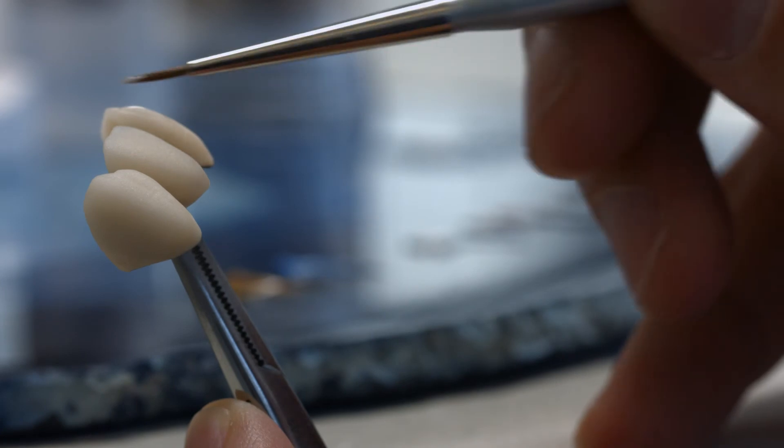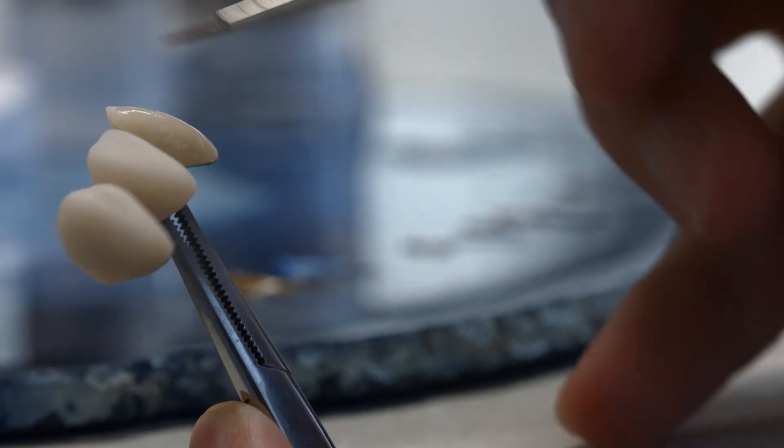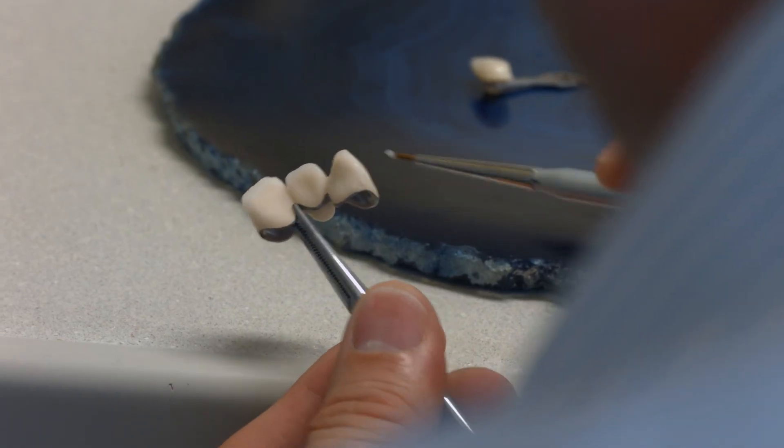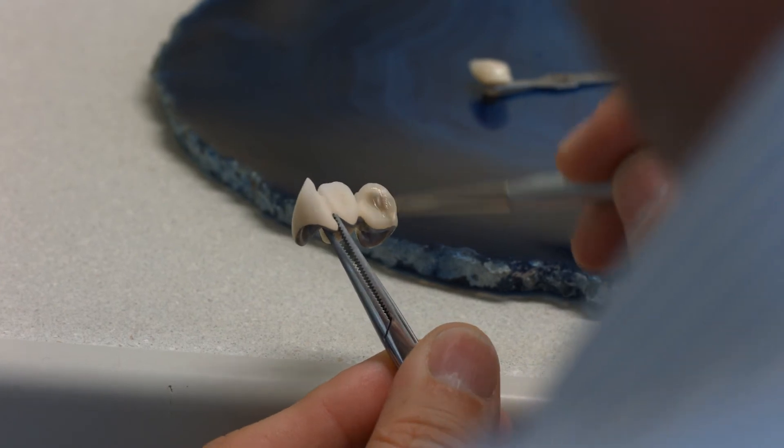Apply the glazing material IPS Ivocolor Glaze. Very little glaze is required to achieve a glossy and silky matte appearance. You will control the degree of gloss with the amount of glaze you apply and not with the firing temperature you use.